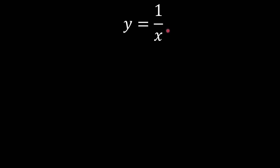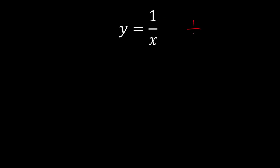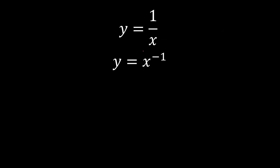What if we have a reciprocal function? Eventually we can do this with the reciprocal rules, but it's not going to be covered in SPM, so we're going to change this to index form. How do we turn it to become index? If you still remember, 1 over x to the power of n can be written as x to the power of negative n. So if there is no power here, it serves as 1, and when we bring it up, it becomes the power of negative 1.